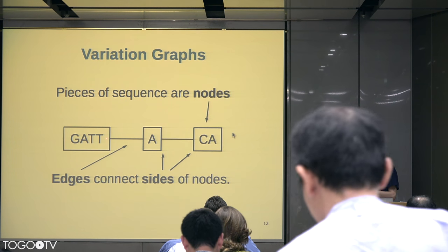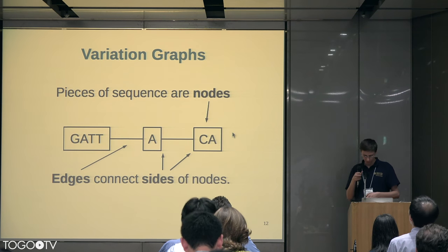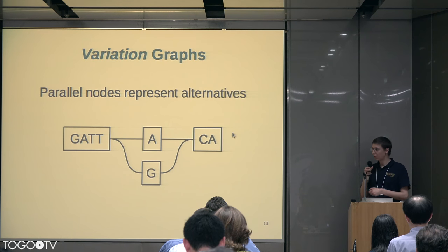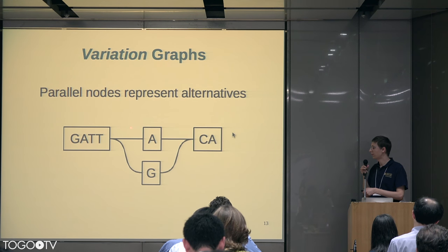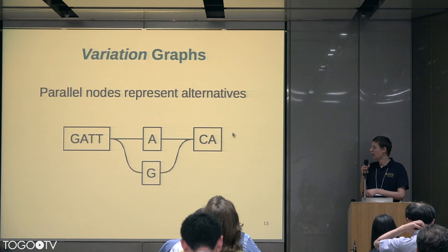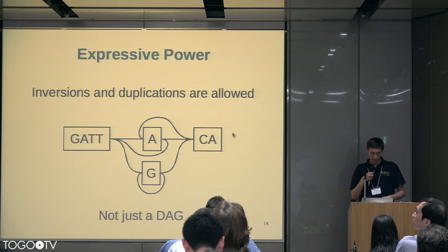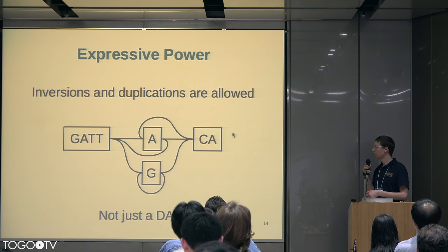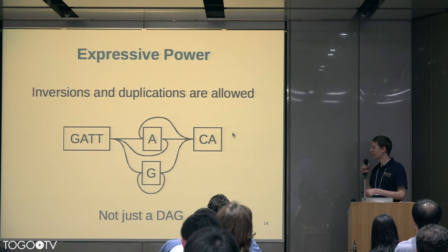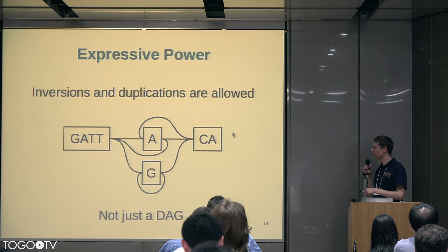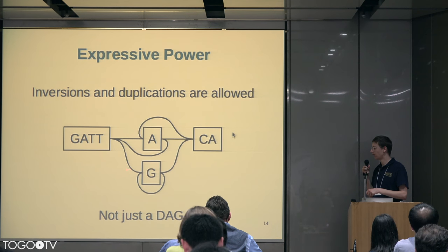So from here, this edge goes from the right side of this node to the left side of this node. You can put nodes in alternation, in parallel — this represents a single nucleotide polymorphism. Some people can have A, some genomes can have G, and you continue on. But we also have more expressive power: we can draw inversions, going through this A either forward or backward. And we can do duplication — going through this G as many times as you want, going around this loop.